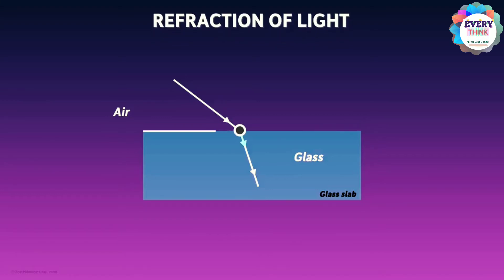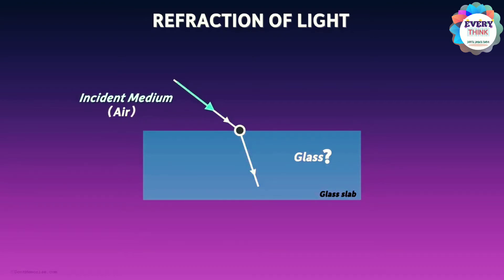At the point where the light bends, it's not going straight. The medium from where the light is incident is called the incident medium, and the medium where refraction occurs is called the refractive medium.